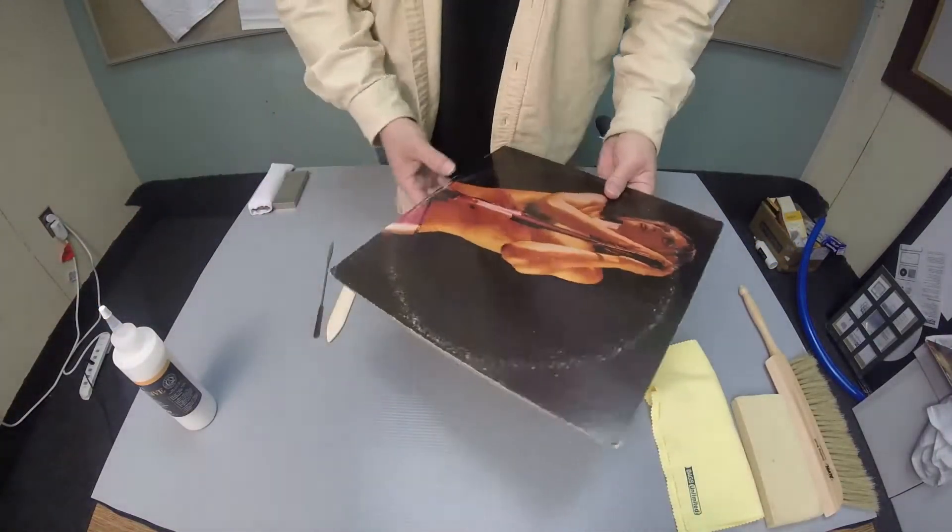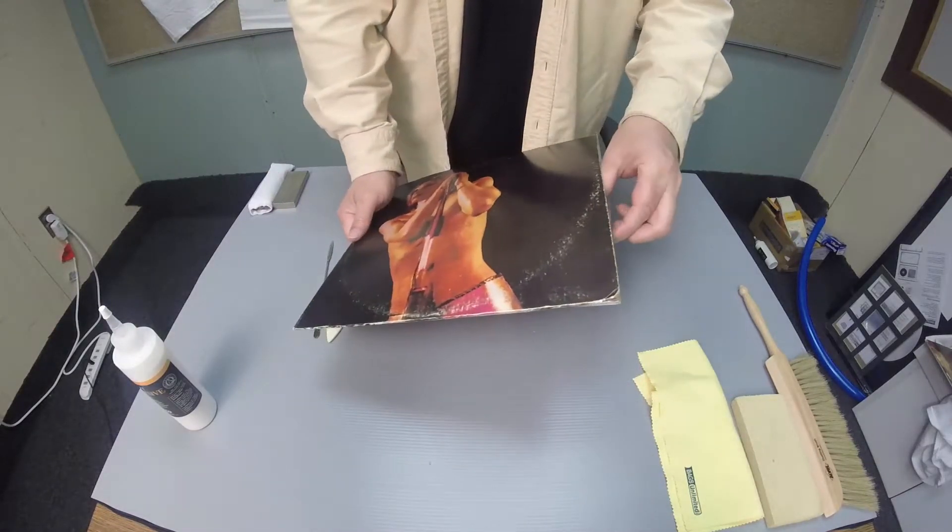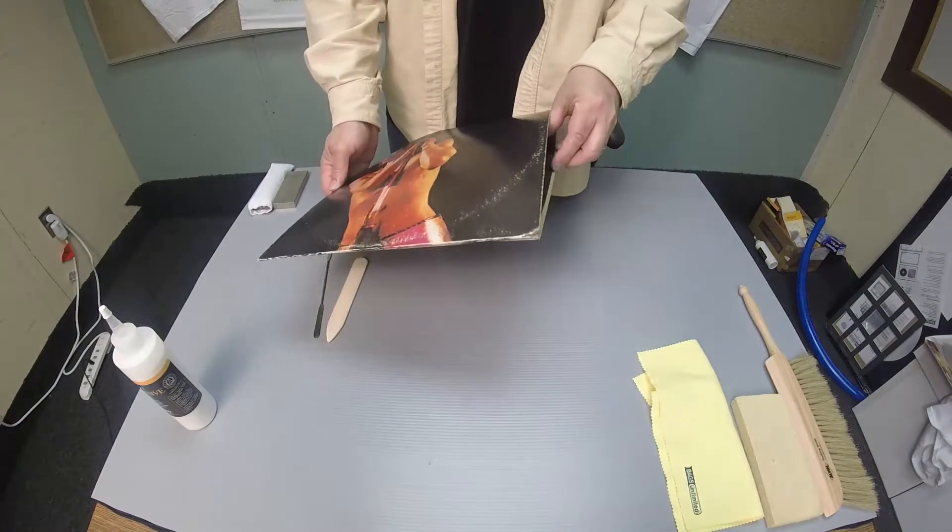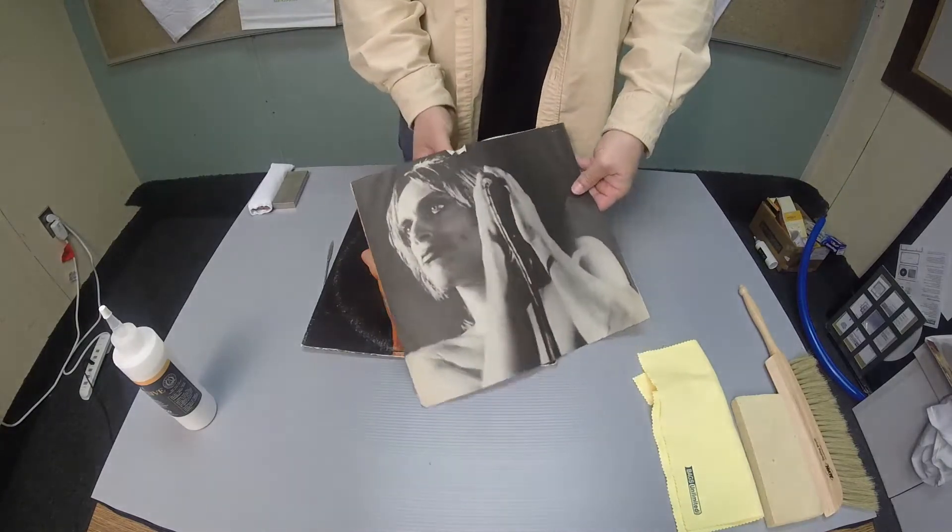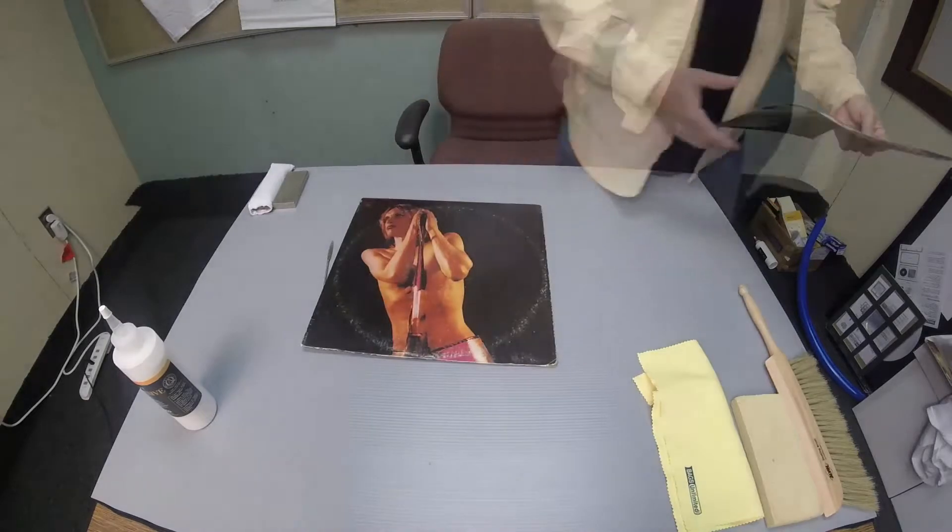As you can see, the jacket is in okay condition. It was obviously stored without any protective sleeve. The disc is in good condition and was stored in a round bottom polyethylene sleeve. This is an original pressing and still has the original paper art sleeve inside. It just has some minor damage which I will address later.